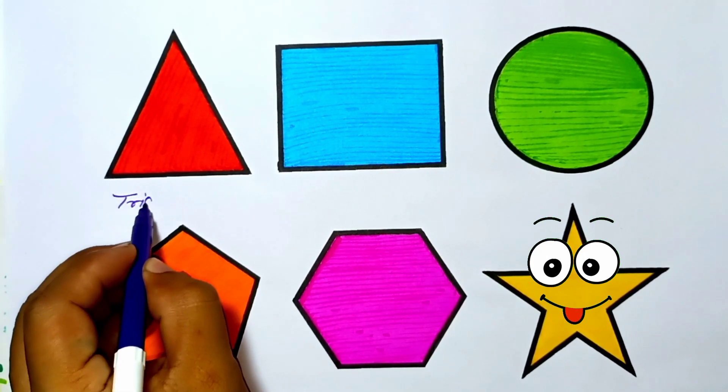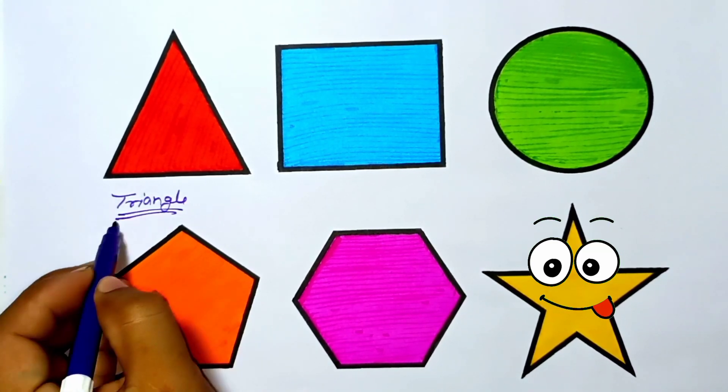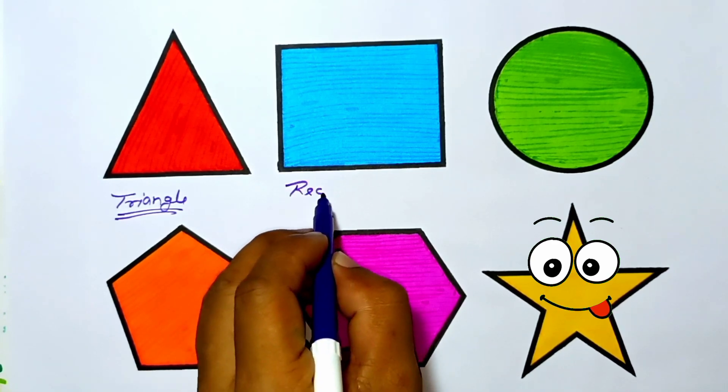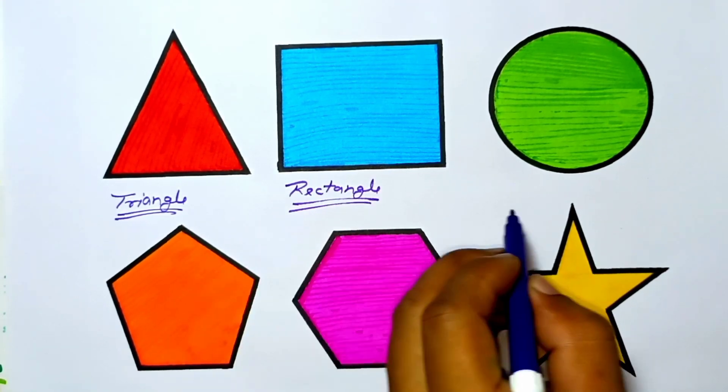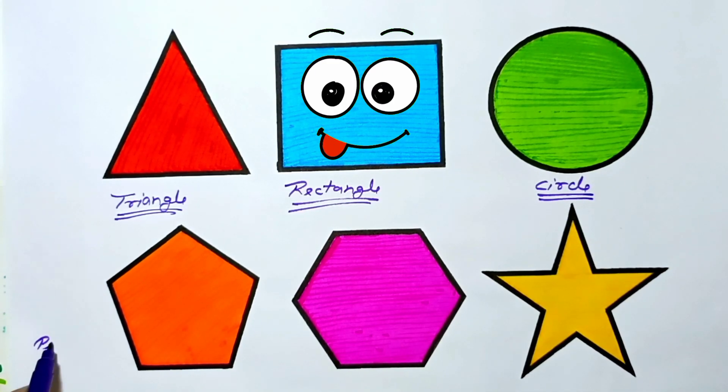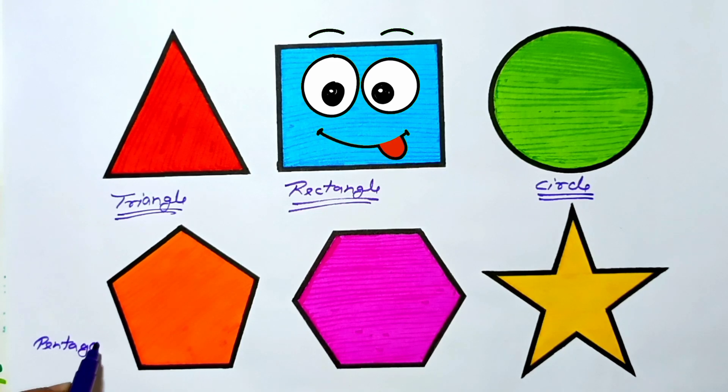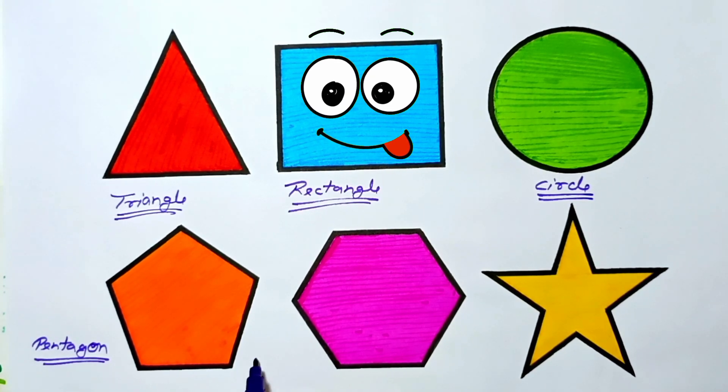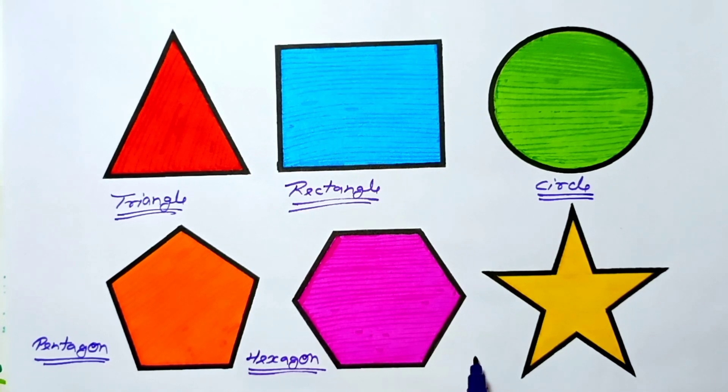Triangle. A, B, C, D, E, F, G, H, I, J, K, L, M, N, O, P. Rectangle. Q, R, S, T, U, V, W, X, Y, and Z. Now I know my ABCs. Next time won't you sing with me.